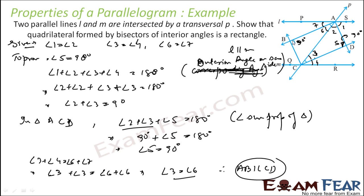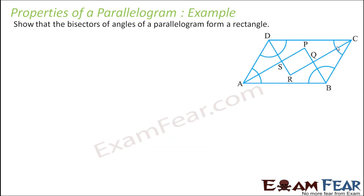Now if we can prove that it is a parallelogram and that one angle is 90 degrees, then it is a rectangle. It is a rectangle because it is a parallelogram and one angle is 90 degrees. We have proved that the bisectors of the angles form a rectangle, by proving this angle is 90 degrees and it is a parallelogram.